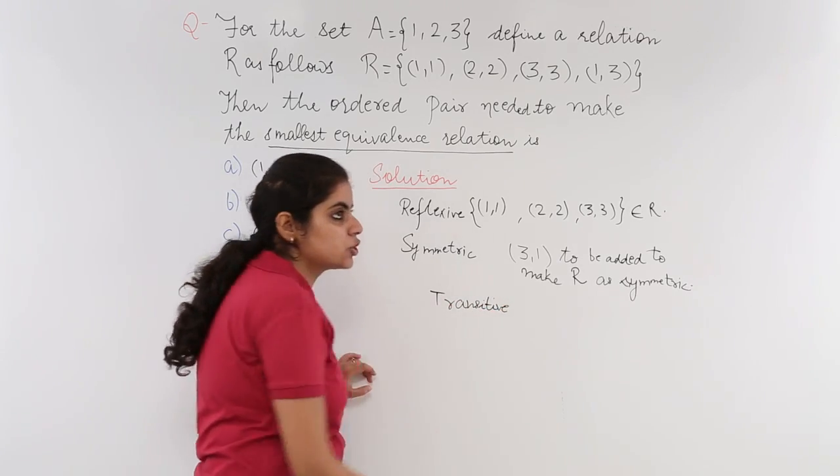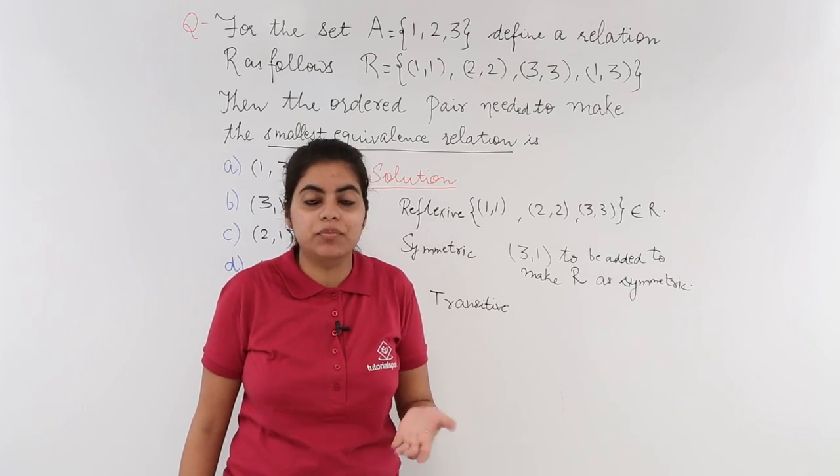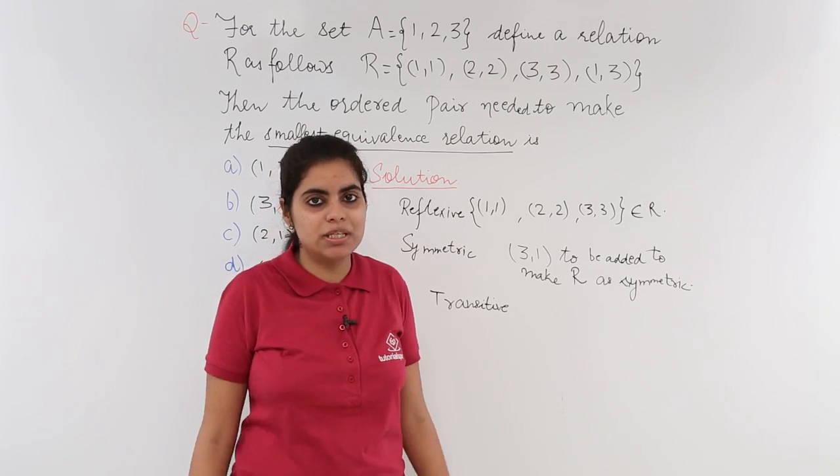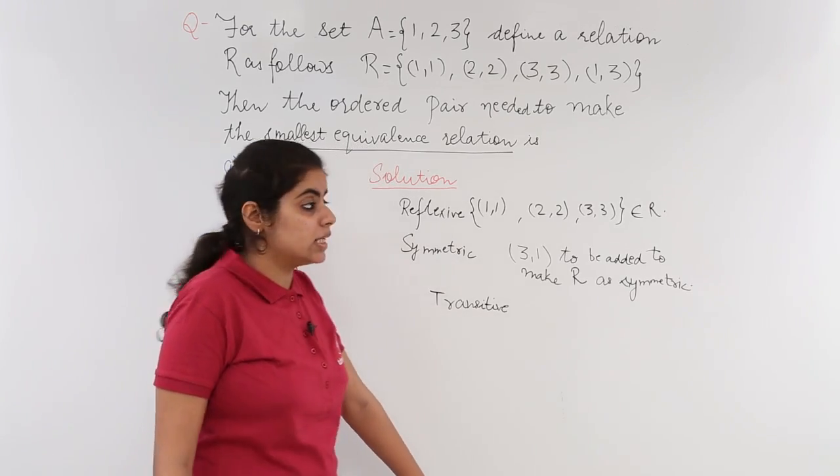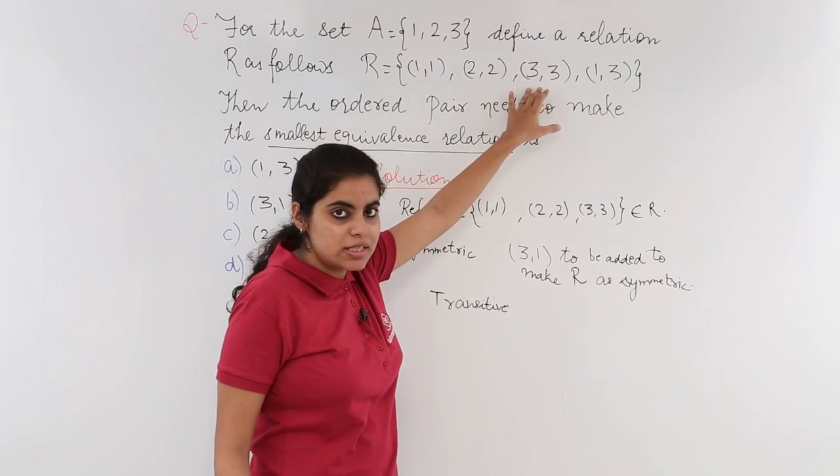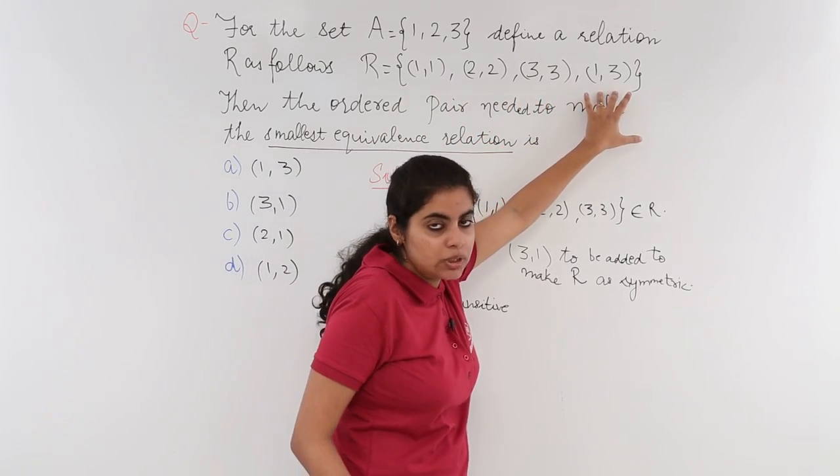For a transitive relation, I already know that if A related to B, B related to C, and if it implies that A related to C, it means it is transitive. Let's see. These all relations are automatically transitive because they are reflexive.